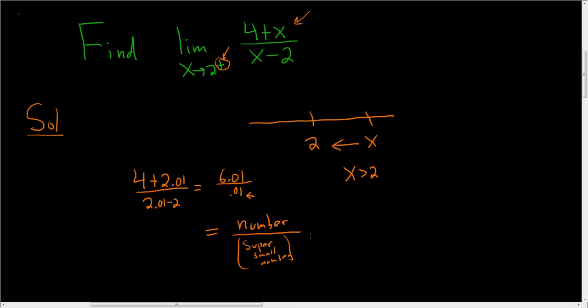Whenever you have a number divided by a super small number, you get a really big number. So the idea is, the closer you get to 2 from the right, the larger this fraction becomes. The limit here is actually just infinity.